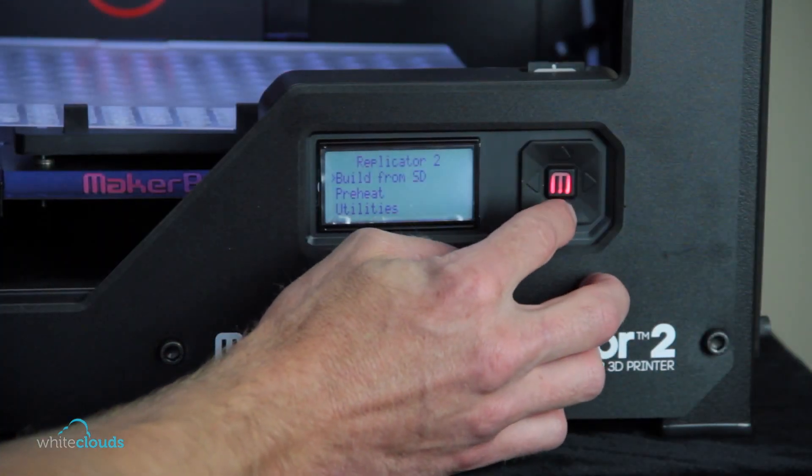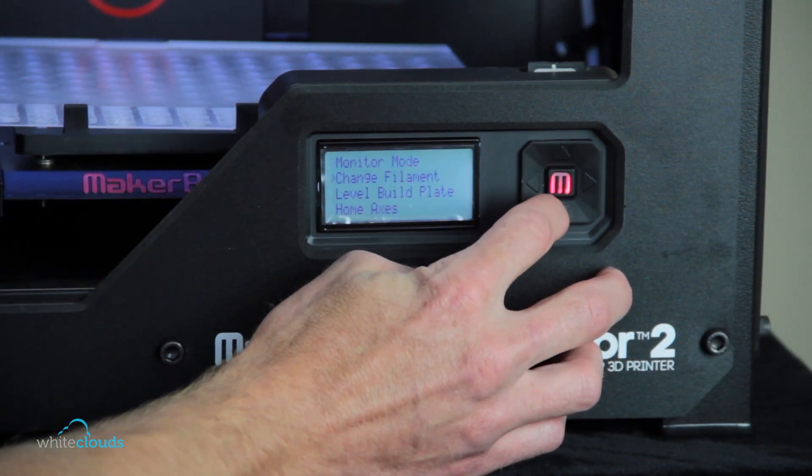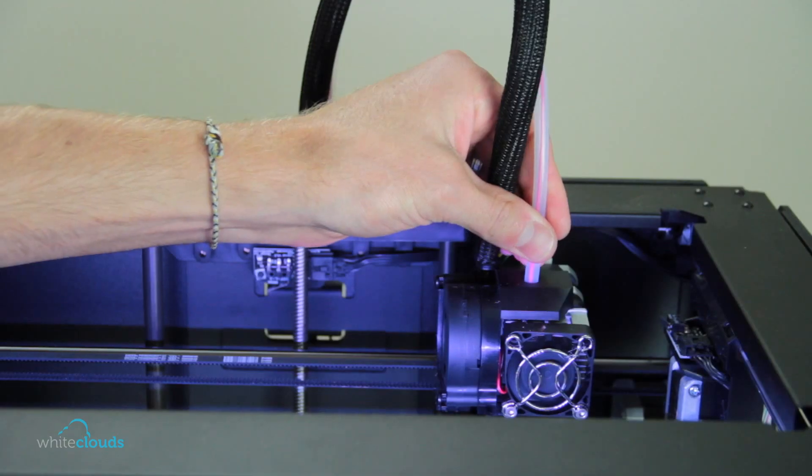First thing we're going to do is unload any filament using the unload script. From the menu select utilities, change filament, unload, and follow the prompts on the screen.